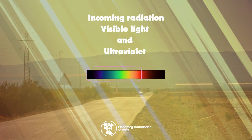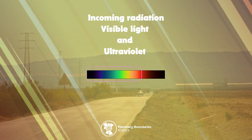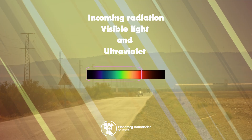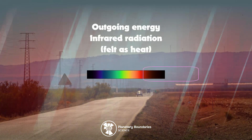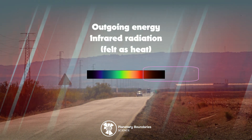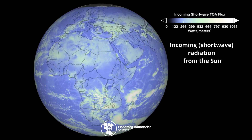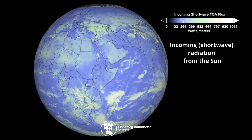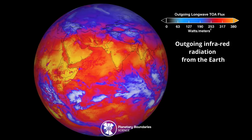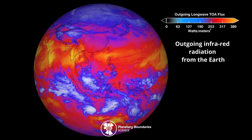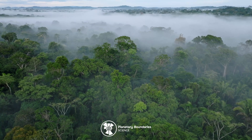If you've ever felt the heat coming off a road on a hot summer's day, then what you're feeling is the energy carried by what we call infrared radiation. The Earth's surface absorbs about 48% of incoming sunlight, which is mostly visible light and some ultraviolet light — that's why you can see the sun and why it can cause sunburn. The surface then radiates this energy back out through the atmosphere to space as infrared radiation. The same amount of energy that reaches the surface needs to escape back into space to keep the Earth's temperature stable and within the safe operating zone for life on Earth.